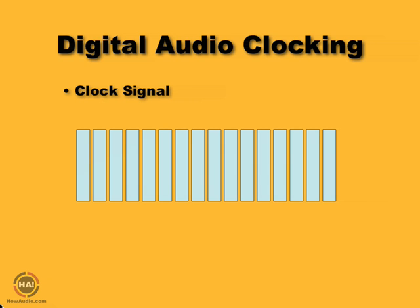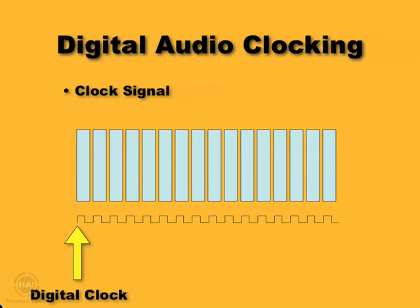However, if we're going to sync a bunch of digital devices together, we're going to need some kind of common clock signal so that everybody can play back at the same rate. That clock signal looks like a square wave. Every time that wave rises up, it triggers another sample — you can see at every rise there's a sample played.